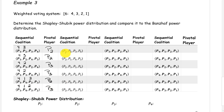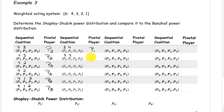The sequential coalition with players 2, 1, 3, and 4: Player 2 has a weight of 3. Player 1 has a weight of 4, and we've met quota, so player 1 is the pivotal player. The sequential coalition with players 2, 1, 4, and 3: Player 2 has a weight of 3. Player 1 has a weight of 4. We've met quota, and so player 1 is our pivotal player.